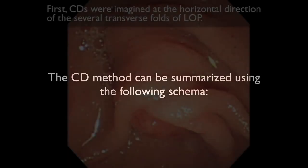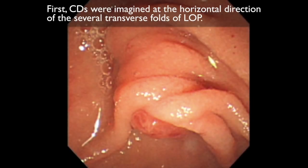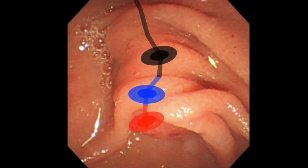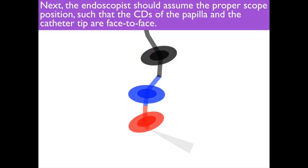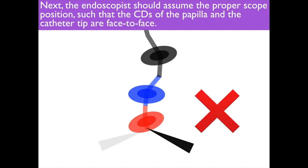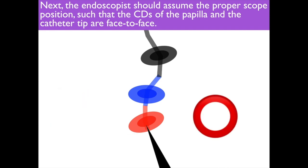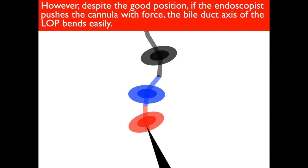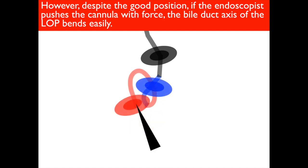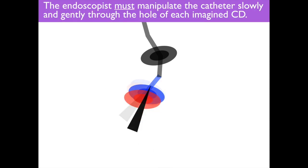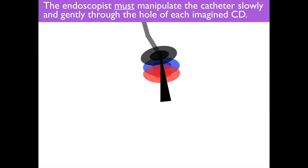The CD method can be summarized using the following schema. First, CDs are imagined at the horizontal direction of the several transverse folds of the long oral protrusion. Next, the endoscopist should assume the proper scope position such that the CDs of the papilla and catheter tip are face to face. However, despite the good position, if the endoscopist pushes the cannula with force, the bile duct axis of the long oral protrusion bends easily. The endoscopist must manipulate the catheter slowly and gently through the hole of each imagined CD.